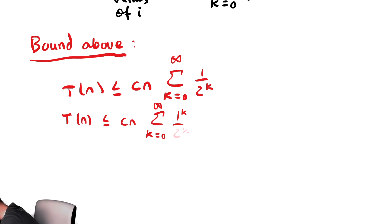One half to the k. And then the reason for doing this is that infinite geometric series has a very convenient formula that converges to 1 over 1 minus the common ratio. So this is T(n) is less than or equal to cn times quantity 1 over 1 minus the common ratio, which in this case is one half.